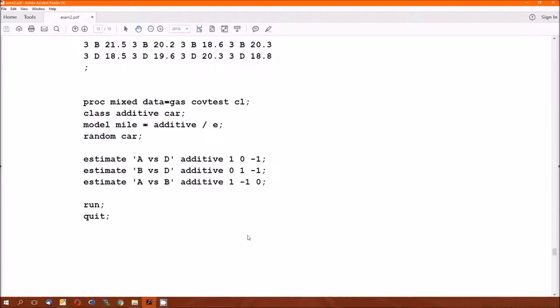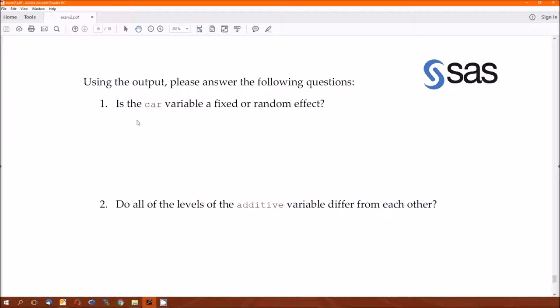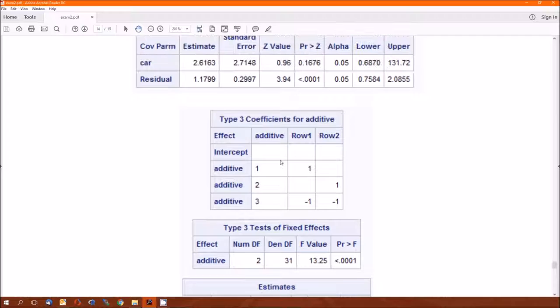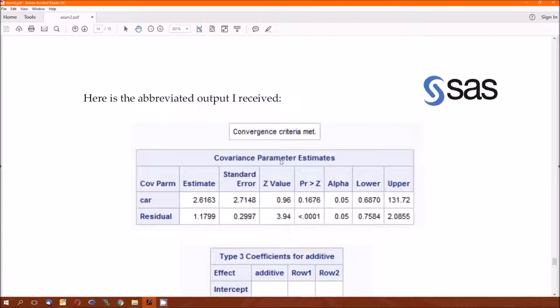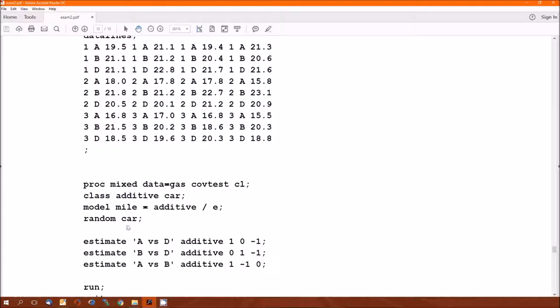Interpretation. Here's the input. Here's the output. Here's the questions. Is car variable fixed or random? Let's find out. I really think it's going to be a random effects variable. Let's look. Yeah. Random car. So car is going to be a random effects variable.